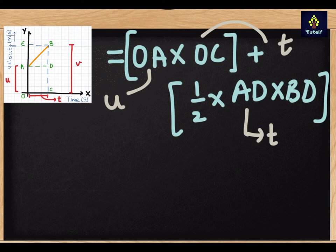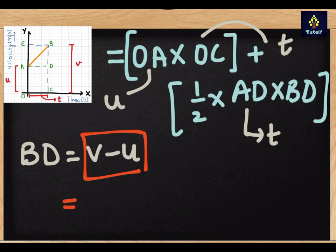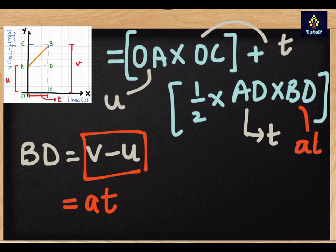BD, from the previous question, from the first equation, we have already calculated that BD is equal to V minus U. And this V minus U is actually AT from the first equation of motion. So I will replace this BD with AT.